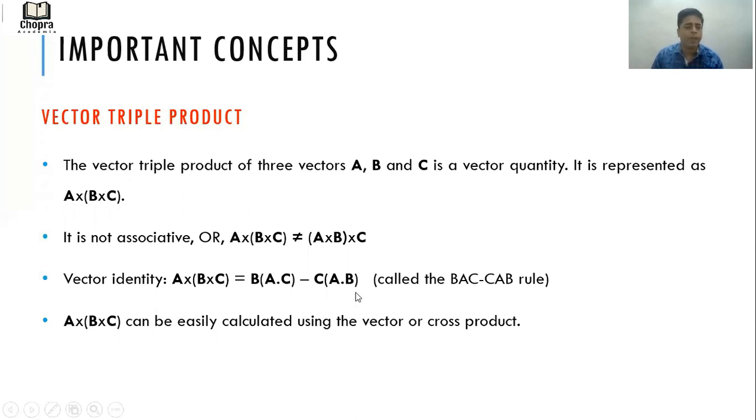Vector identity: A×(B×C) = B(A·C) - C(A·B). This is the identity we will be using and is also known popularly as the BAC-CAB rule. A×(B×C) can be easily calculated using the vector or cross product. We just find B×C using the simple vector product and then again take the vector product with A.